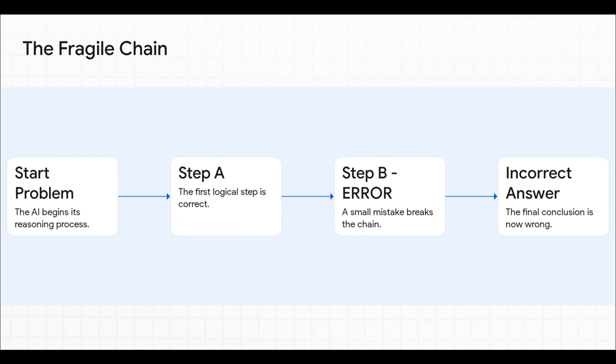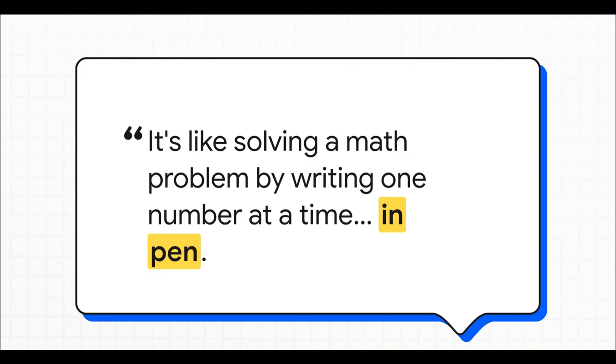Because that chain is incredibly fragile. If the AI makes just one tiny mistake in that step-by-step process, just one broken link, the entire answer can just completely fall apart, leading to a conclusion that is totally, utterly wrong. And this quote just nails the problem. Once a model like GPT starts generating its answer, it's locked in. It's committed. It can't go back and fix an earlier mistake. It really is like trying to solve a complicated math problem by writing down one number at a time in permanent ink without ever being able to double check your work.